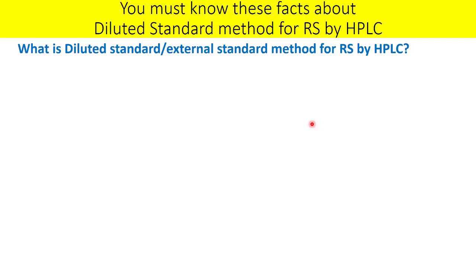How diluted is the question? Most of the time, people use the concentration of the diluted standard near the concentration of an impurity — which can be the specification of an impurity. But which impurity specification should be considered? Because you may have three known impurities and also a specification for unknown impurities.